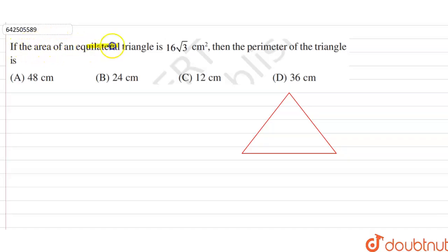If the area of an equilateral triangle is 16√3 cm², then the perimeter of the triangle is?